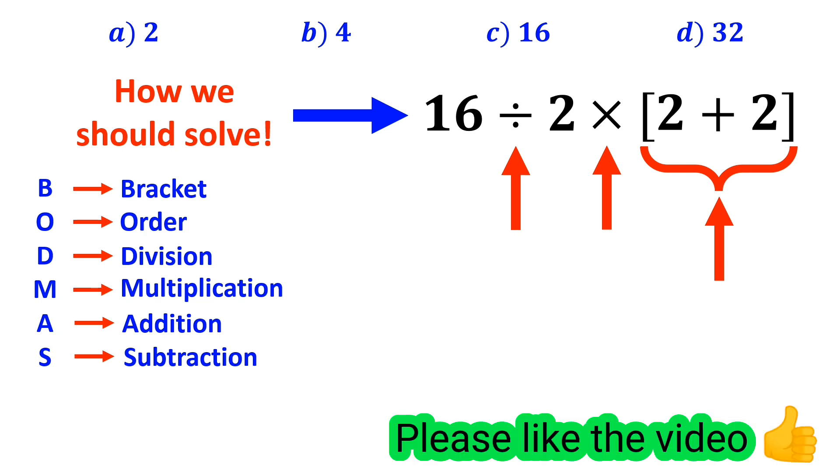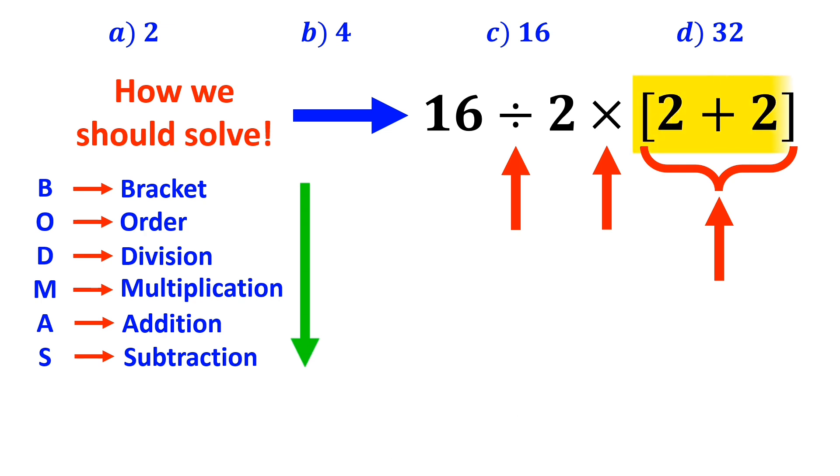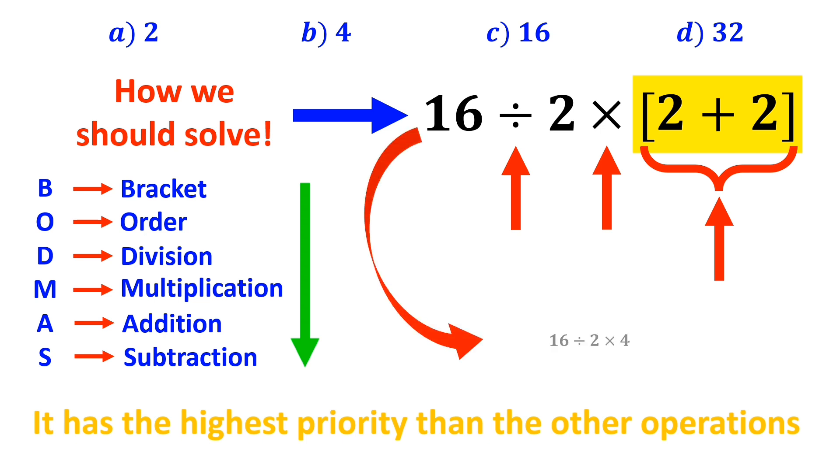We need to perform these operations in order from top to bottom. So we'll start with the bracket first, because it has the highest priority than the other operations. Okay, this expression simplifies to 16 divided by 2 times 4.